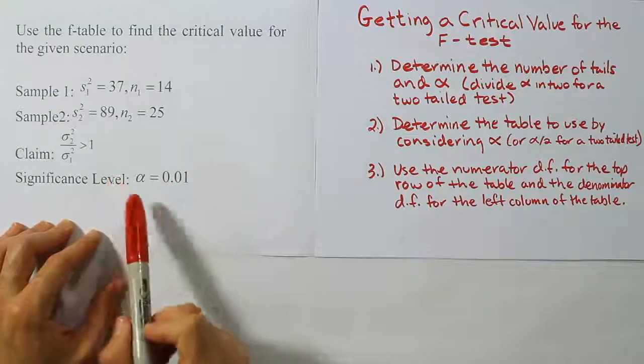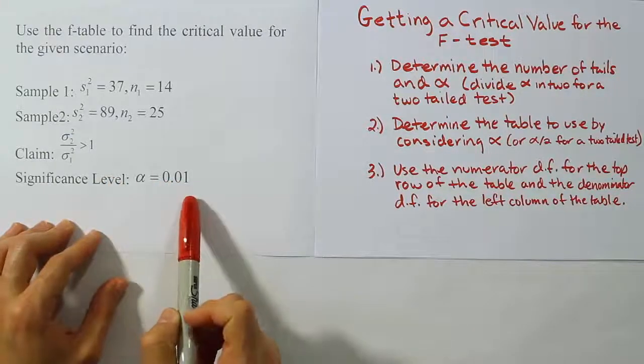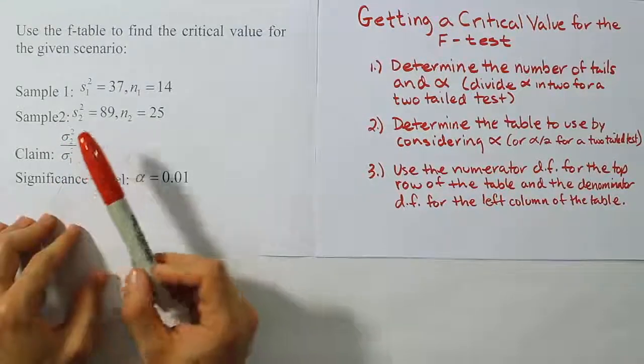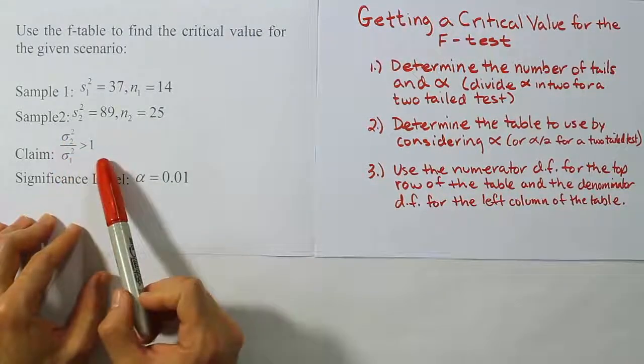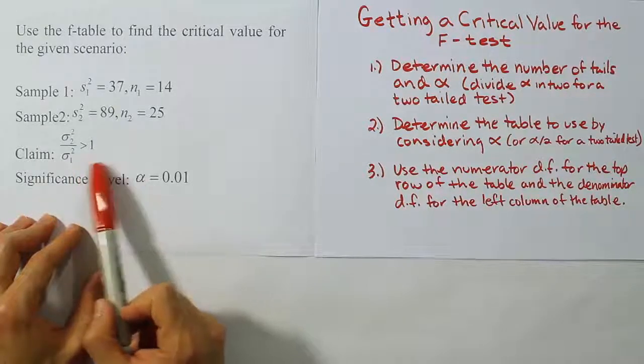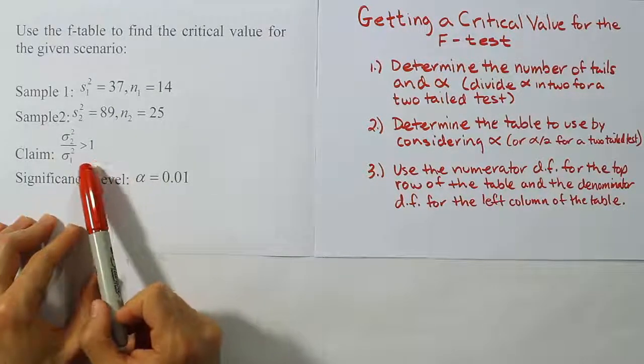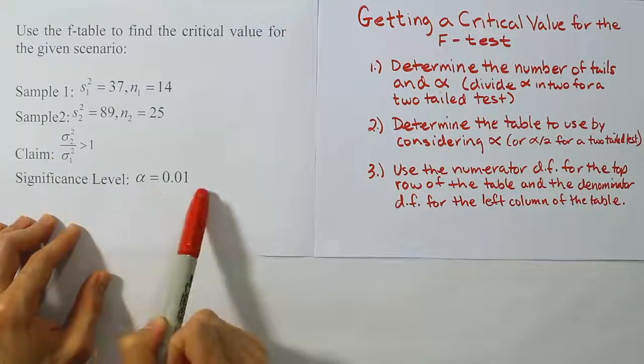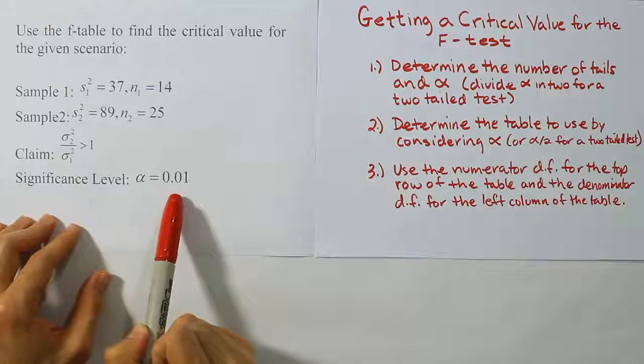So when you look at this problem, it's easy to see that alpha is 0.01. They spelled that out for us, and we're also told here the claim. The claim is that this ratio is greater than 1. The important thing about this is this greater than symbol indicates a right-tailed test or a one-tailed test. Because of that, we do not have to divide alpha by anything. We keep alpha as it is, and that's the alpha we'll use for the problem.